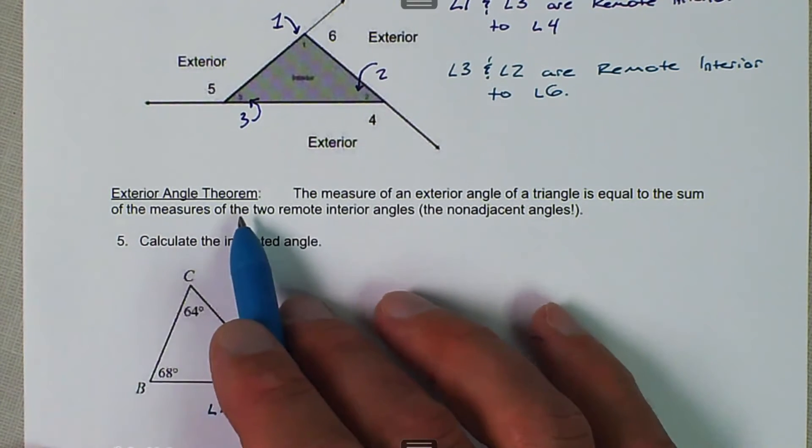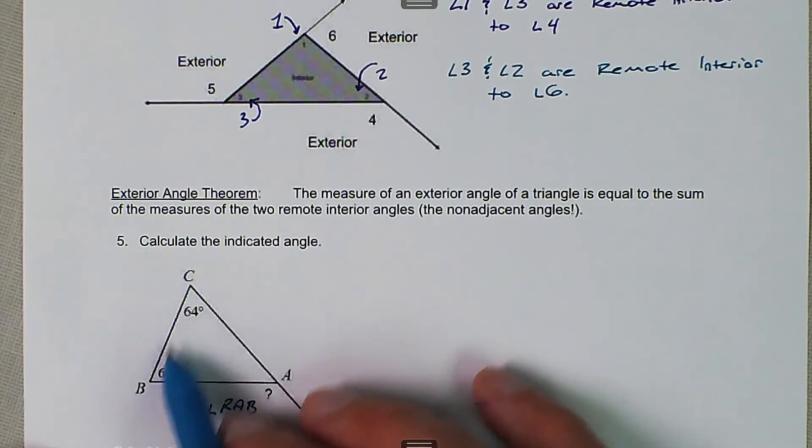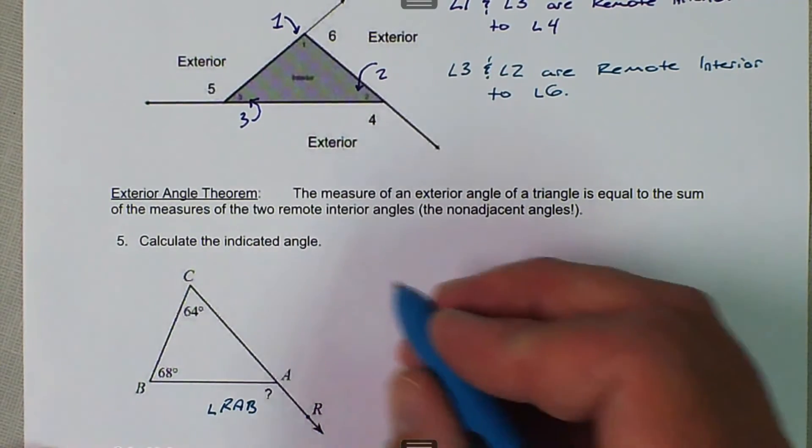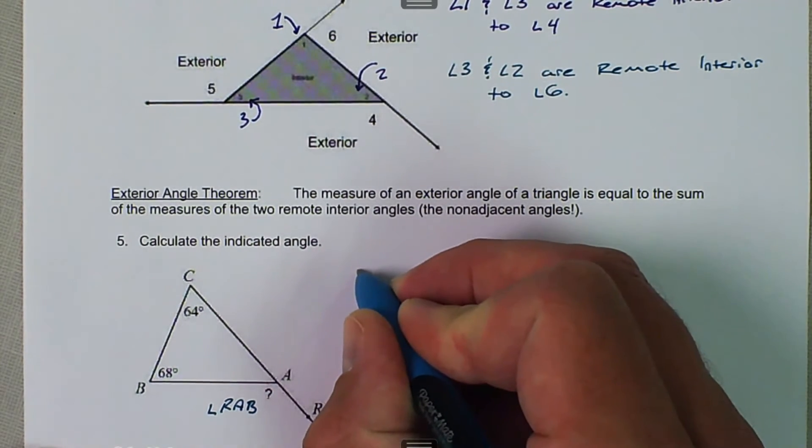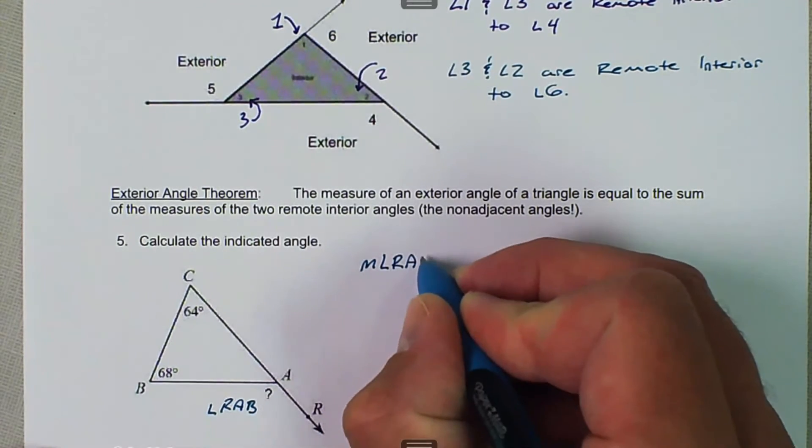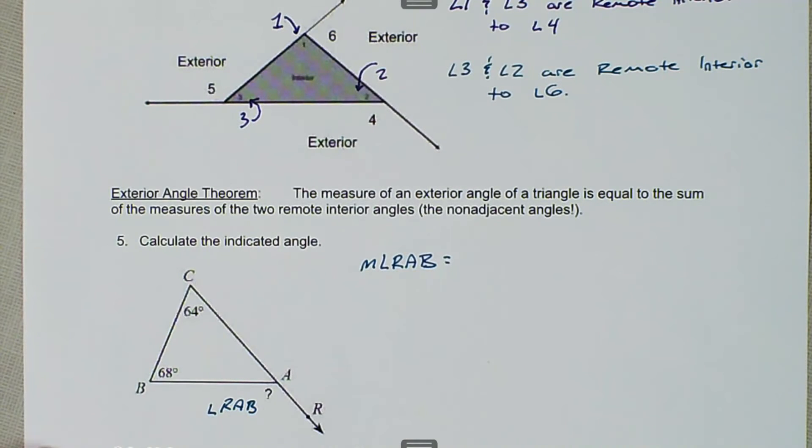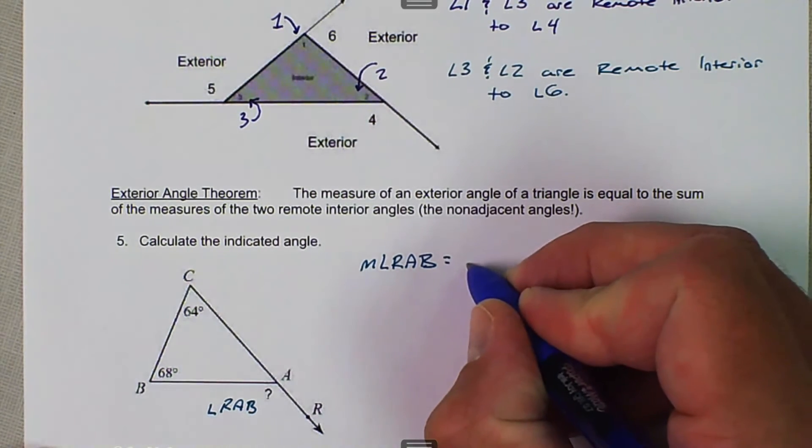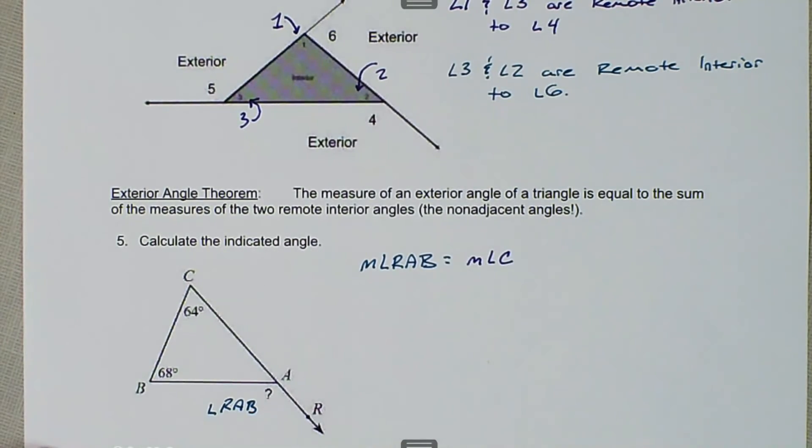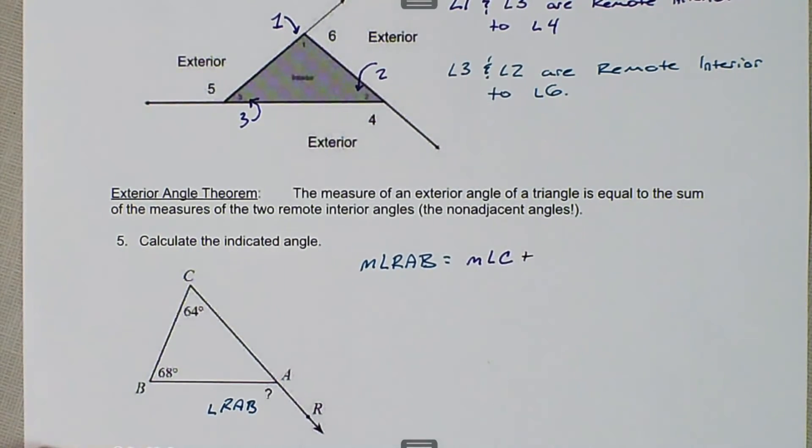By the exterior angle theorem, this exterior angle is equal to the other two angles added together. So we can write out an equation: the measure of angle RAB is equal to the measure of angle C plus the measure of angle B.